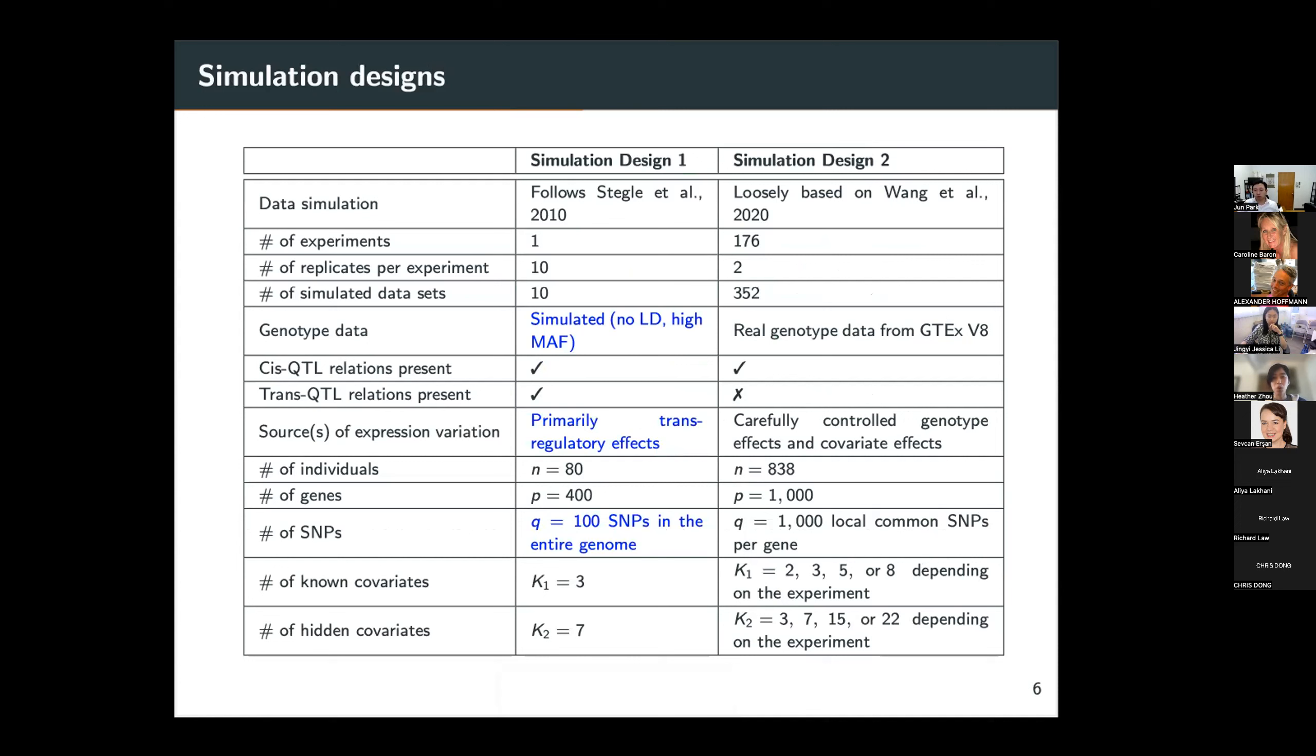So we designed two sets of simulations to evaluate the performance of these various methods and the different ways of using them. In the first simulation design, which we call simulation design one, I followed the data simulation of Stegle et al 2010, which is the original PEER publication, which showed that PEER improves upon not accounting for hidden variables, among other things.